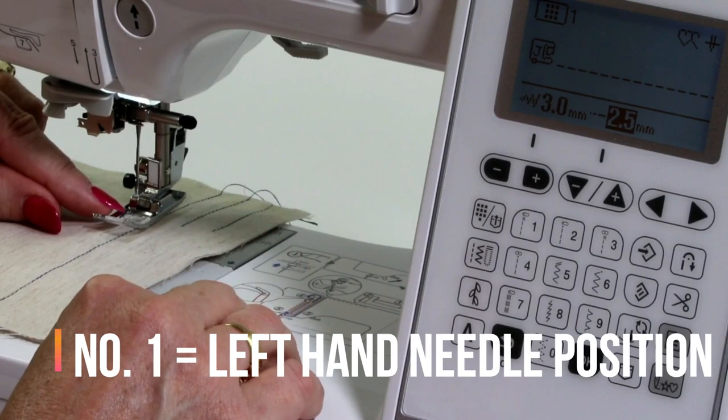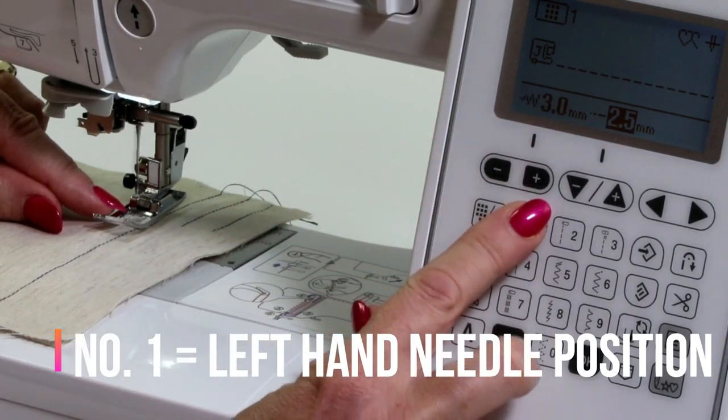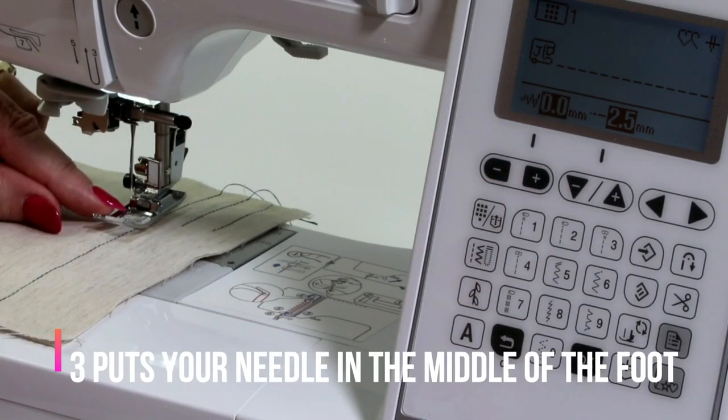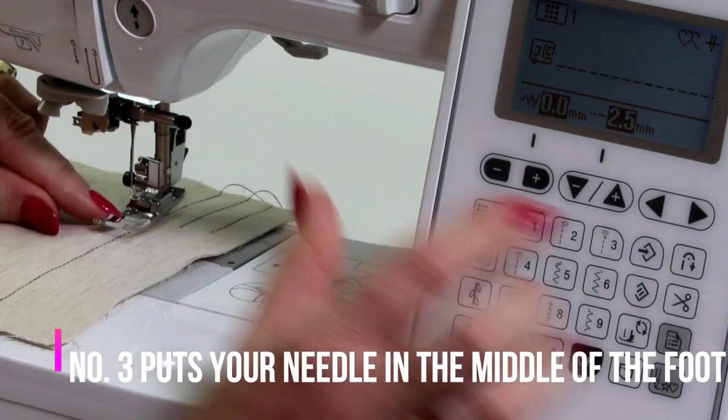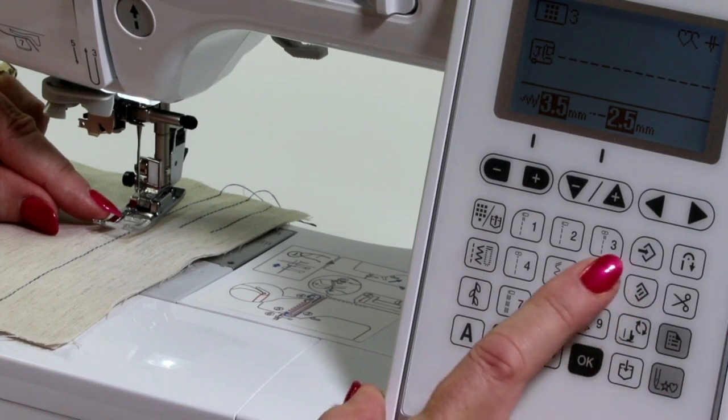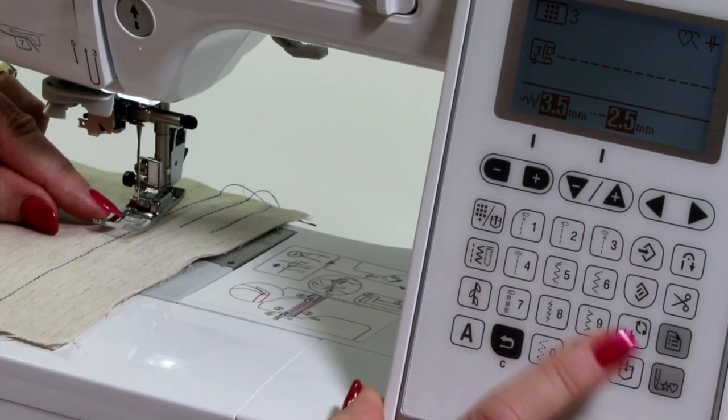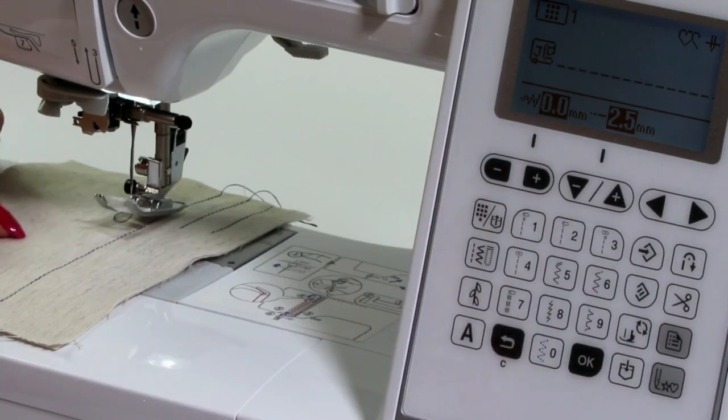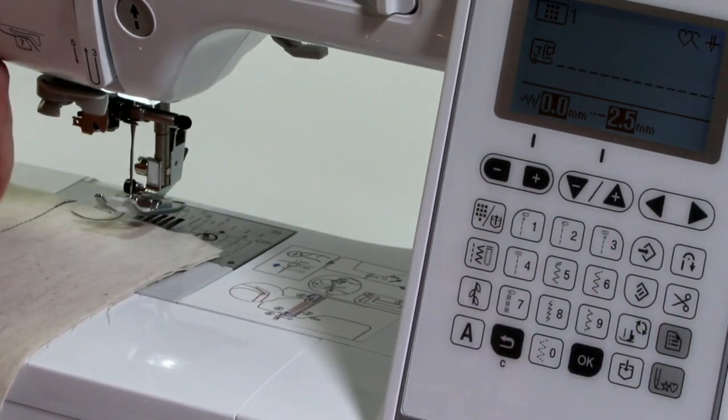You're not sure where it was originally, so just select the number one stitch again. But if you're wanting the needle to go into the middle, of course, you're going to use your number three, which gives you your center needle position. But we're going to start by using our left hand needle position.